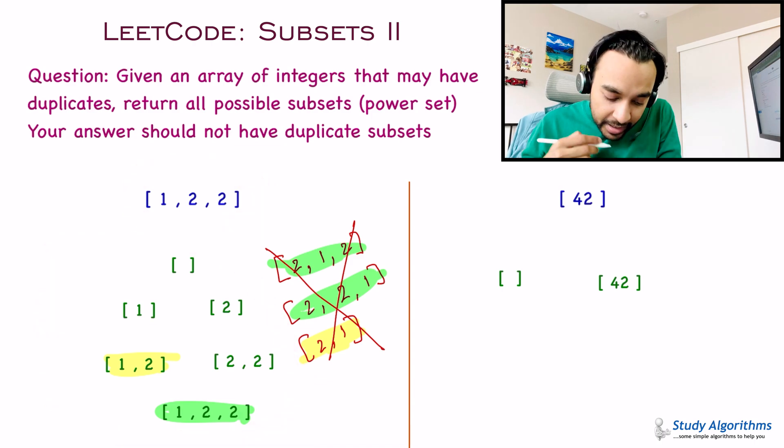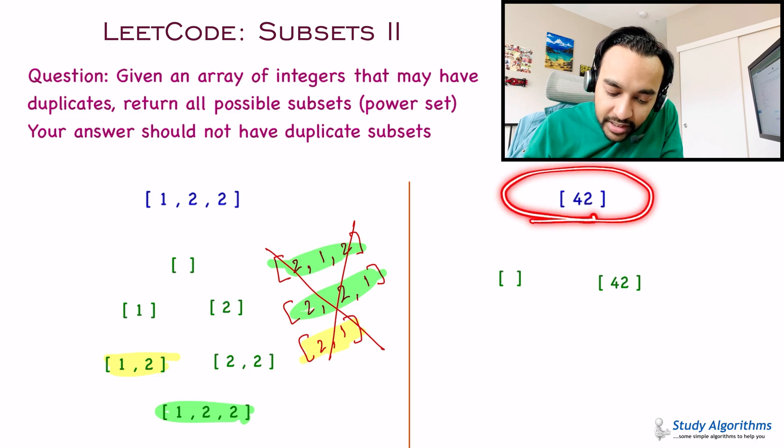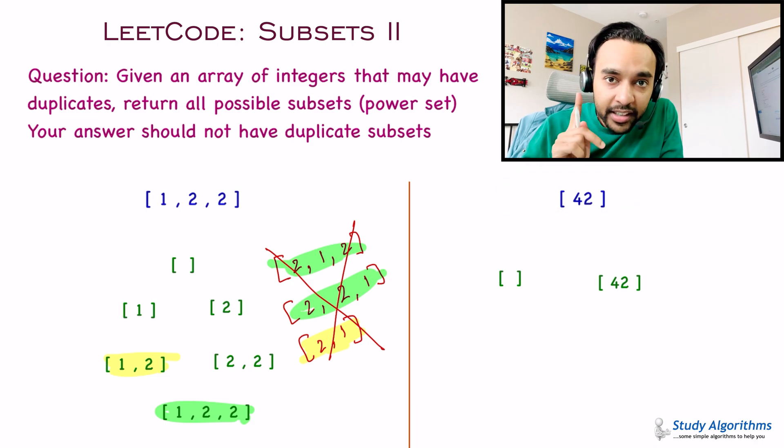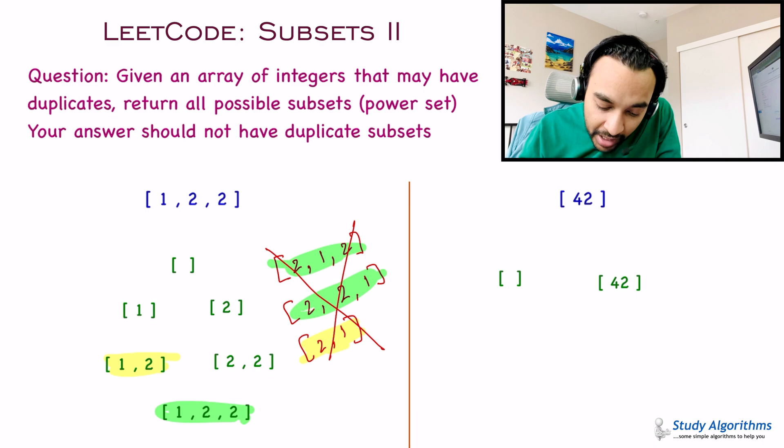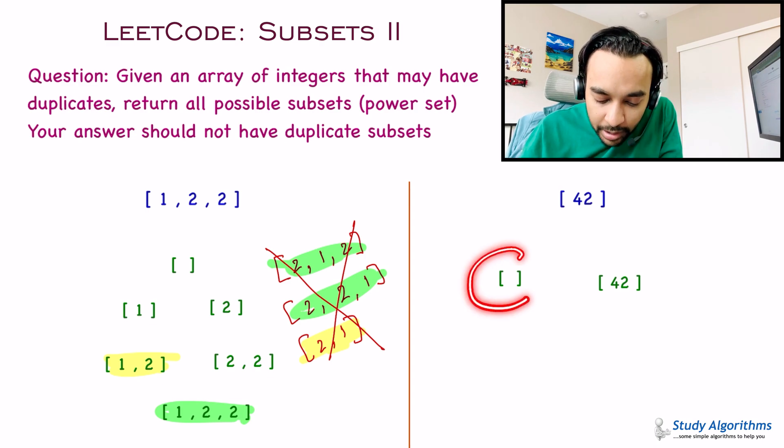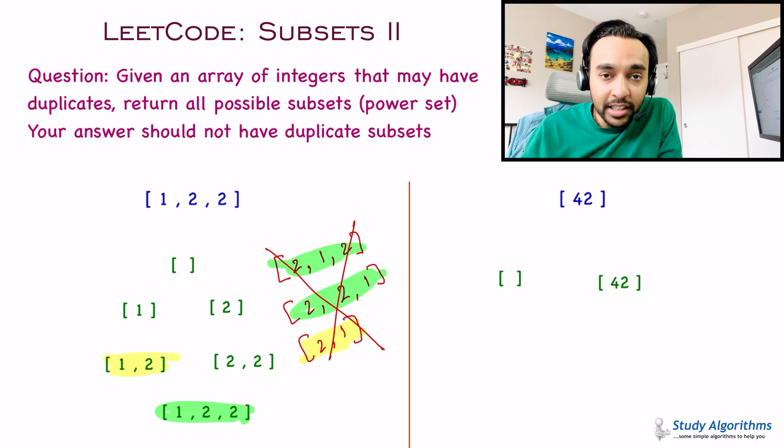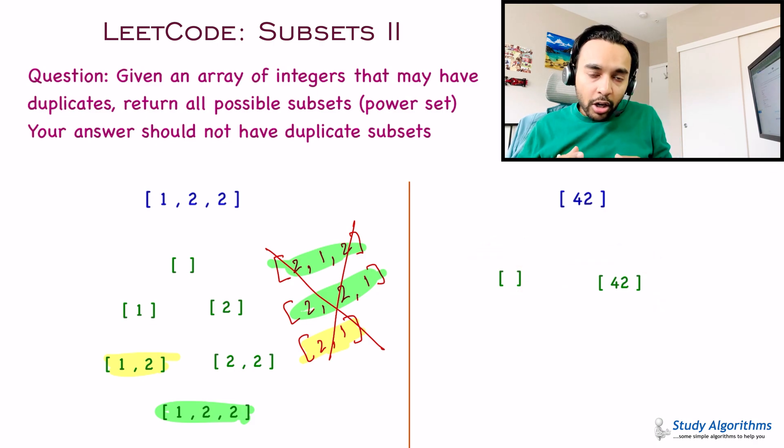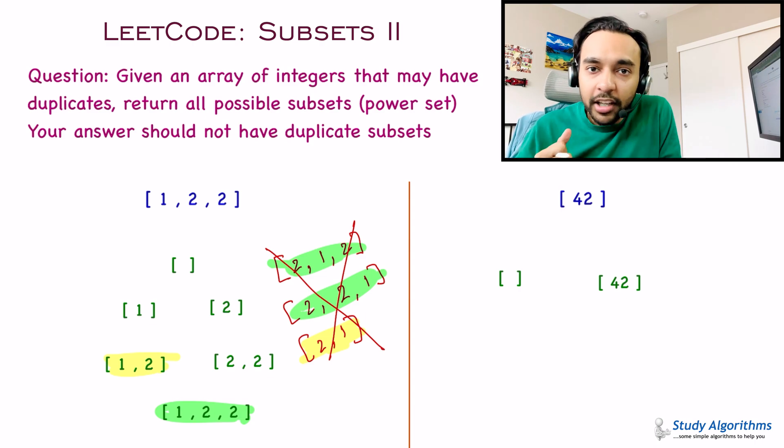So, your answer cannot have these subsets. Correct? So, given this array, you have to return all of these subsets as your answer. Right? Similarly, you can have one more case. For example, in my test case number 2, I have an array that just has a single element. Right? It does not have any duplicates. So, this answer will still remain the same. You will have an empty set and one more subset with the element itself. Right? So, now that you have understood the problem statement and you want to give it one more shot, feel free to try it out. Otherwise, let us see where are all these duplicates coming from and what can we do about it?